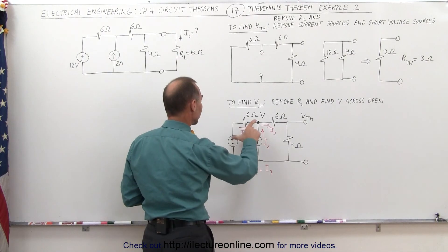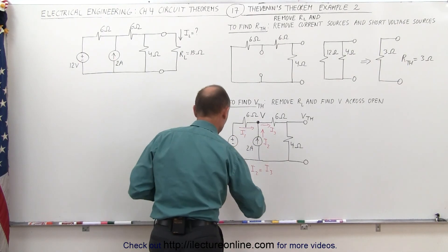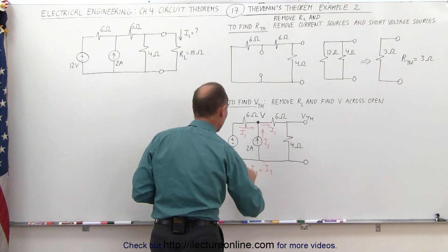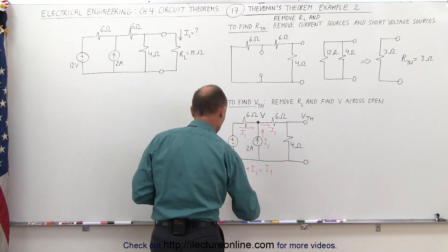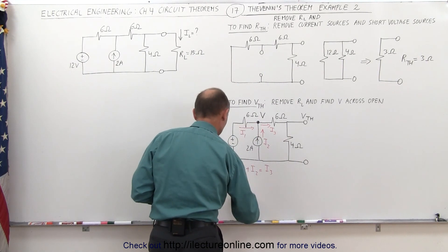I1 will be equal to the voltage difference between these two, which means 12 volts minus V, whatever V is, that's the voltage at that node, divided by the resistance in between, which is 6,